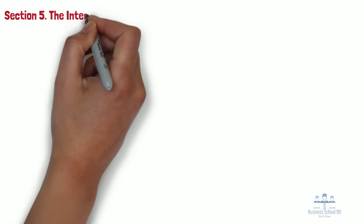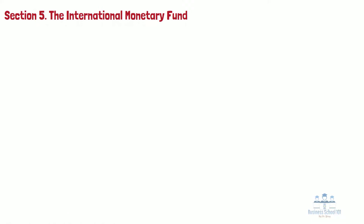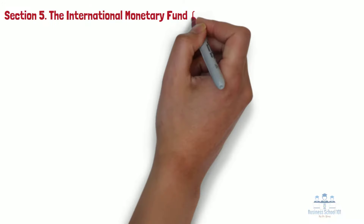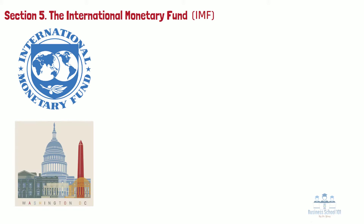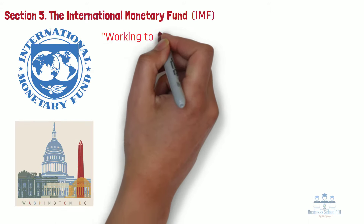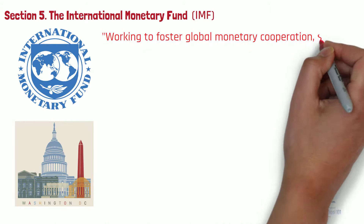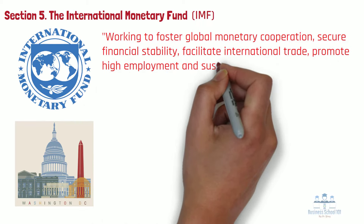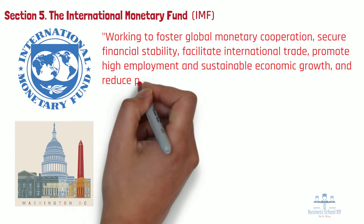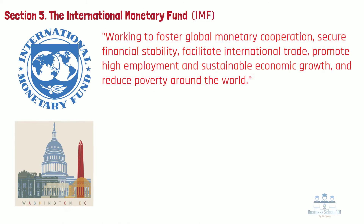Section 5: The International Monetary Fund. The International Monetary Fund, or IMF, is an international financial institution also headquartered in Washington, D.C., United States, consisting of 190 countries. Its stated mission is working to foster global monetary cooperation, secure financial stability, facilitate international trade, promote high employment and sustainable economic growth, and reduce poverty around the world. Generally, the IMF uses the following three primary methods to achieve its missions.